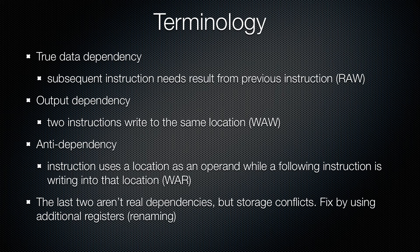A couple of data dependency types. The kind you have to worry most about is a true data dependency, which is read after write. That's what we saw in the original video causing stalls — the multiply was writing to a register, and the store wanted to read that value to store it to memory. There's also output dependencies — not a real dependency — which is two instructions writing to the same location, write after write. And anti-dependency — write after read — which also isn't a real data dependency; they're both just storage conflicts. You can shuffle registers around and get rid of them. The thing to really worry about is the true data dependency, because that's what causes stalls.